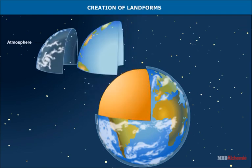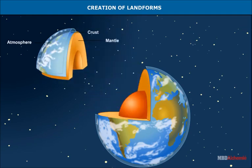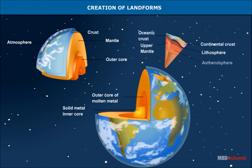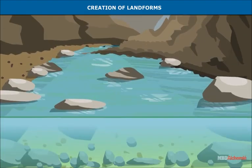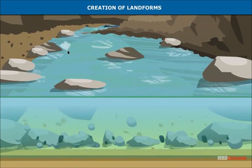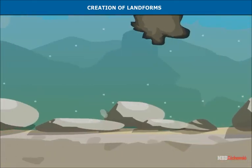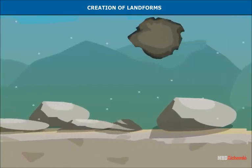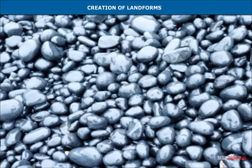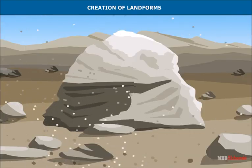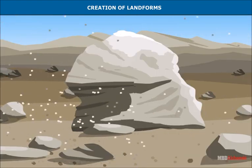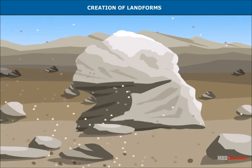All the landforms are created by forces acting on the surface of the earth's crust and in its interior. On the surface of the earth, rocks are broken into smaller pieces by a process called weathering — the continuous action of erosion by wind, water, and temperature variations. These small pieces or particles of rocks are then transported and deposited in low-lying areas, including oceans.